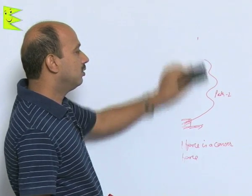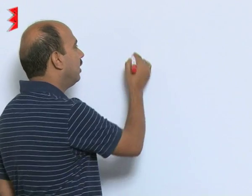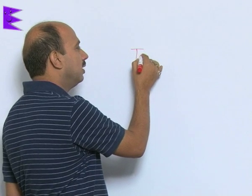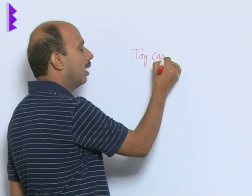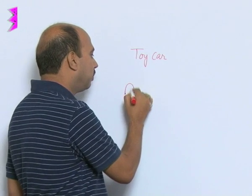Now, another example is here as I was discussing in the previous slide about elastic potential energy. So, I gave an example of this toy car. What happens? In toy car, inside there is a spring like this.